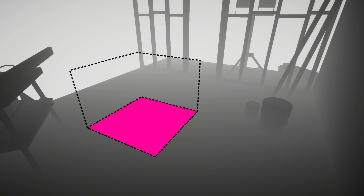That will require us to take depth values from the depth texture, then reconstruct the wall position from those values. Once we've done that, we'll delete the pixels outside the intersection. For example, this point reconstructed from the depth texture is inside the cube, but this point is not.